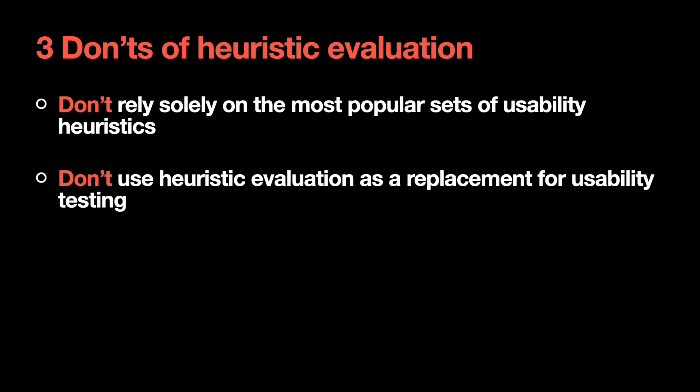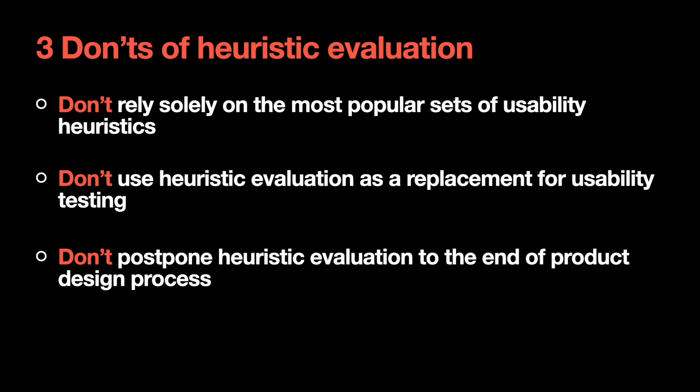First do heuristic evaluation, then usability testing. When you know the areas where you have usability flaws, you can make usability testing more focused. Last but not least, do not postpone heuristic evaluation to the very end of the design process. A heuristic evaluation can help you identify a substantial number of usability issues before your design reaches the implementation phase. The earlier you find the problem, the less expensive it will be to fix. The perfect moment is right after a team creates the first functional prototype and before the team starts to code it.